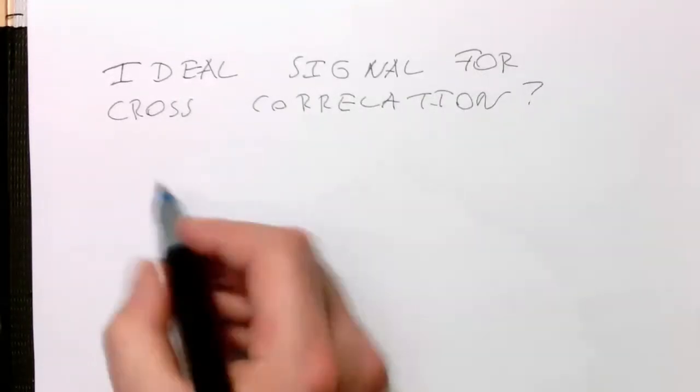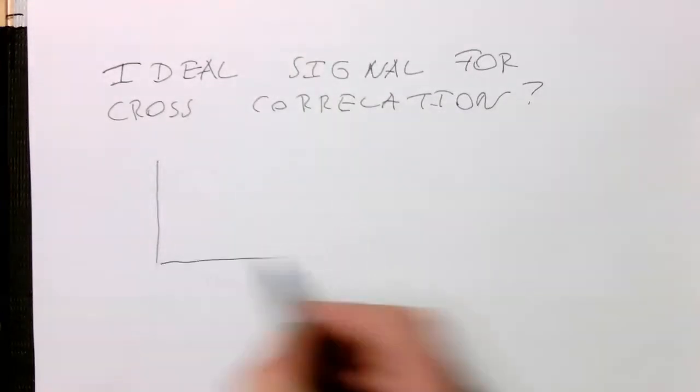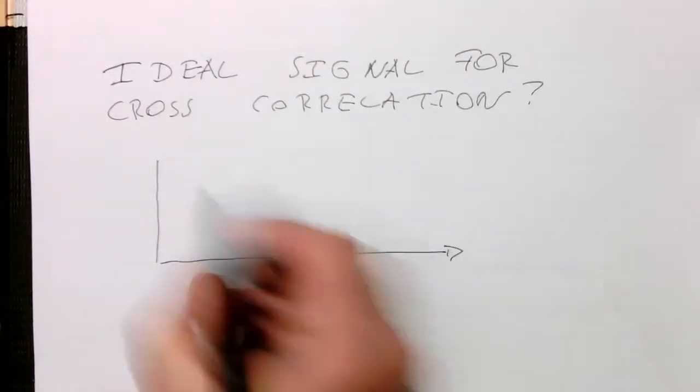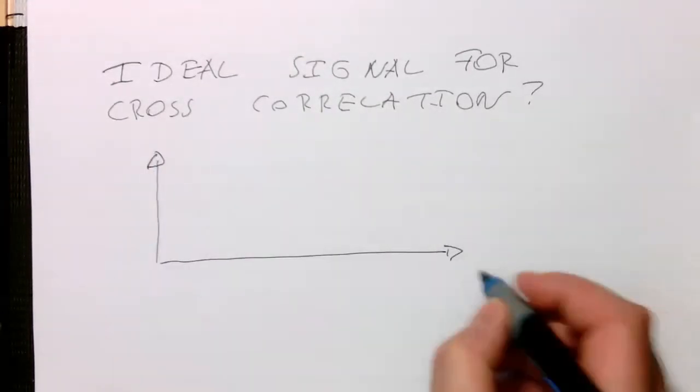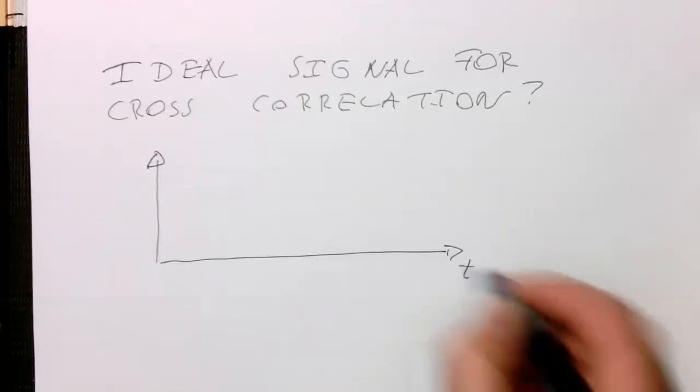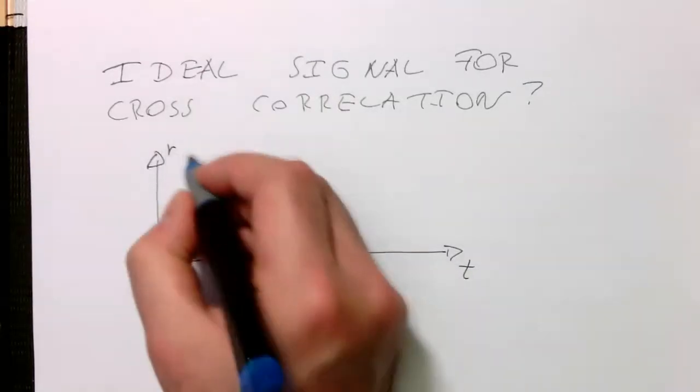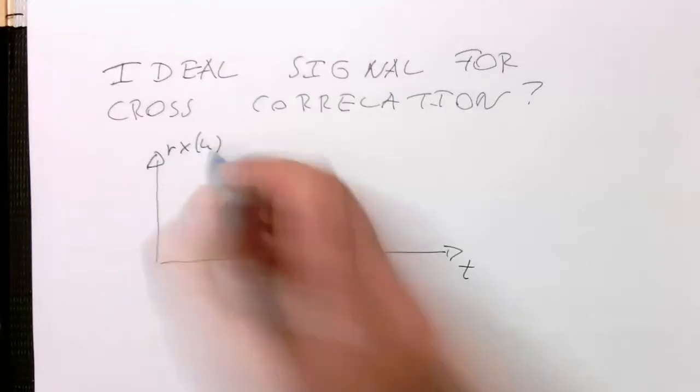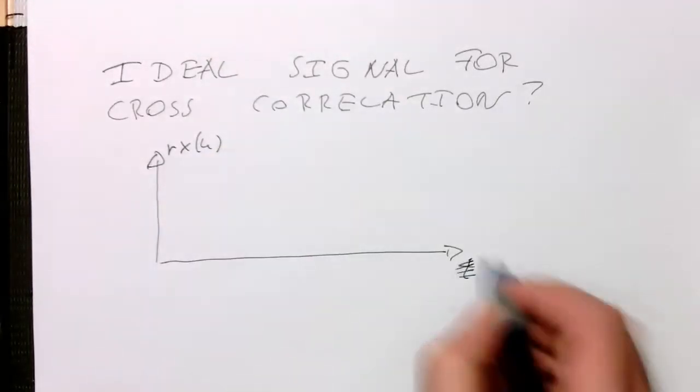Let's think of a good signal now. How does a good signal look like? That's our received signal here, n. I should not call this T, but n.